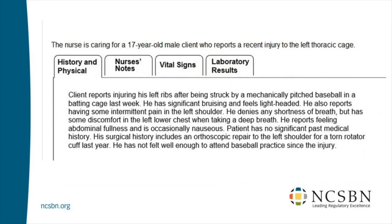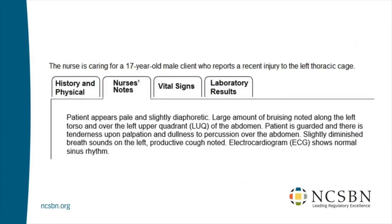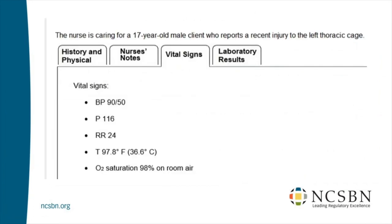That was a lot of information, but there's more. Nurses' notes: patient appears pale, slightly diaphoretic. Large amount of bruising noted along the left torso and over the left upper quadrant of the abdomen. Patient is guarded, tenderness upon palpation, dullness to percussion over the abdomen, slightly diminished breath sounds on the left, productive cough noted. ECG shows normal sinus rhythm.